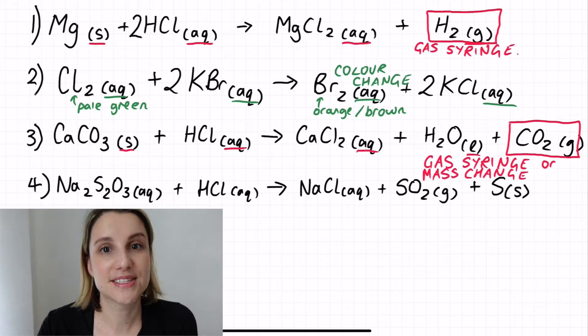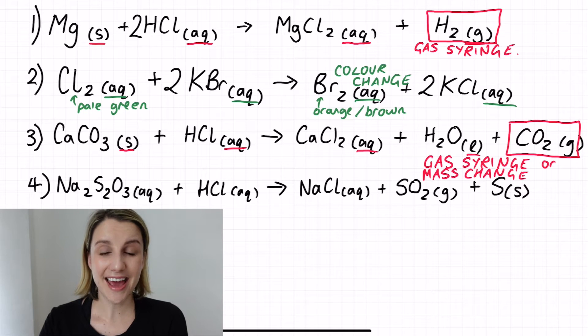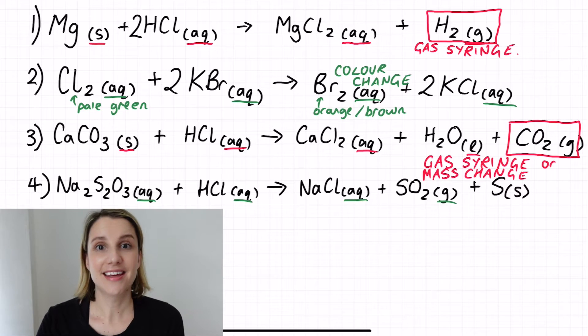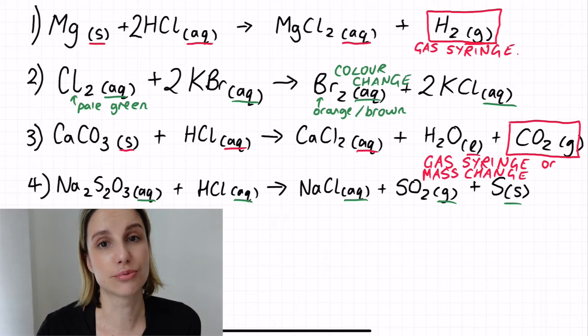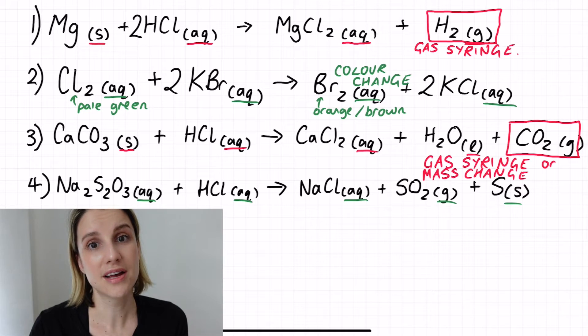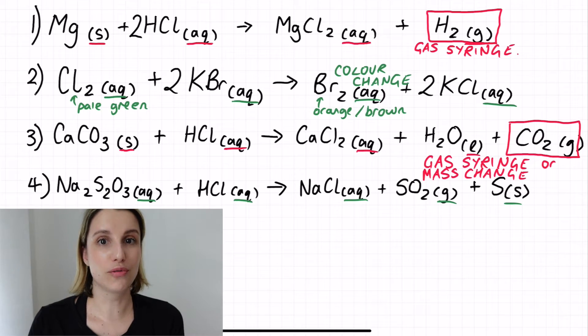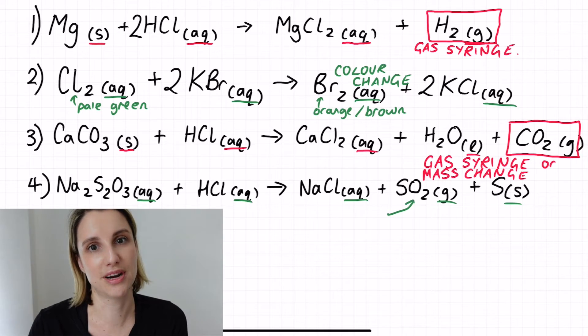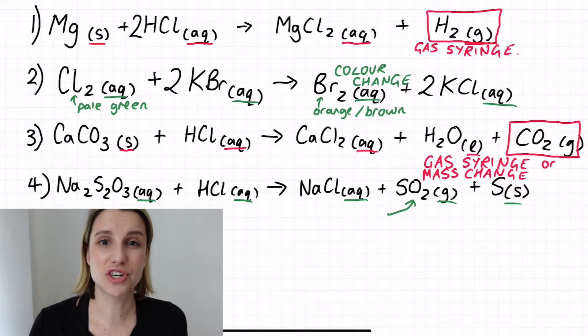In this reaction between sodium thiosulfate and hydrochloric acid you can see that again you're making a gas, so immediately you might think that you can use a gas syringe. But actually in this case the sulphur dioxide is really soluble in water, so that means that it will dissolve in the solution itself before it even really makes it into a gas syringe. So in this case that option is off the table.